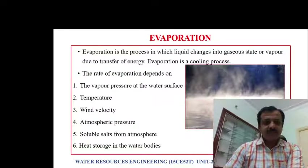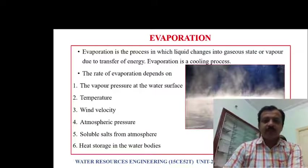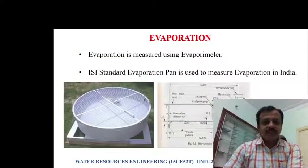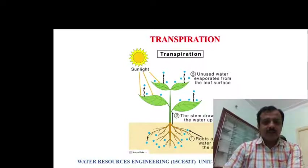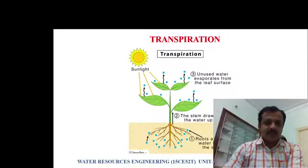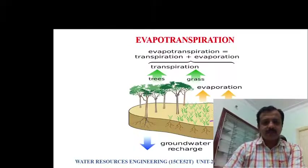Evaporation is one of the losses. Evaporation is the process by which liquid changes into gaseous or vapor state due to transfer of energy. Evaporation is measured using an instrument called an evaporation pan. Transpiration is a process by which water escapes from the leaves and body of plants and evaporates — this process is called transpiration.